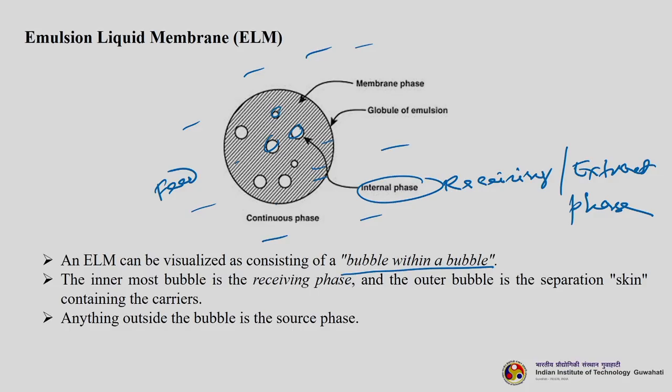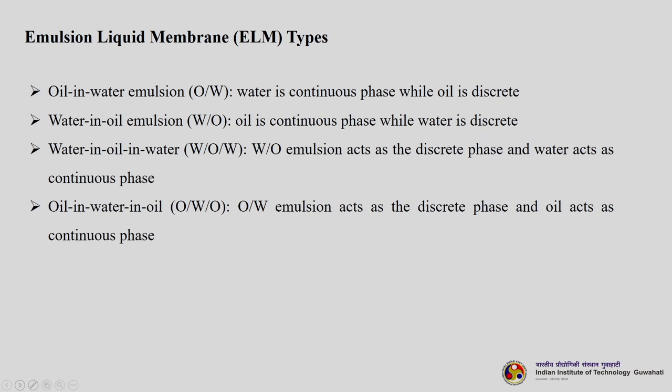The innermost bubble is the receiving phase, the outer bubble is the separation skin containing the carriers, and anything outside is the source or feed phase. Different types of ELMs include: oil-in-water emulsion (water is continuous, oil is discrete), water-in-oil emulsion (oil is continuous, water is discrete), water-in-oil-in-water (water-oil emulsion as discrete phase, water as continuous phase), and oil-and-water-in-oil (oil-water emulsion as discrete phase, oil as continuous phase).